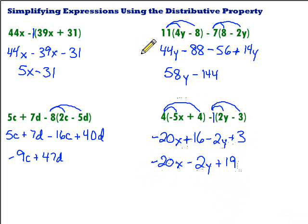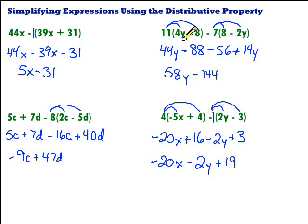Hopefully this was helpful in understanding how to simplify expressions using the distributive property. Remember, the distributive property simply allows us to take whatever is being multiplied by something in parentheses and multiply it by each piece inside the parentheses to get rid of them. Good luck.